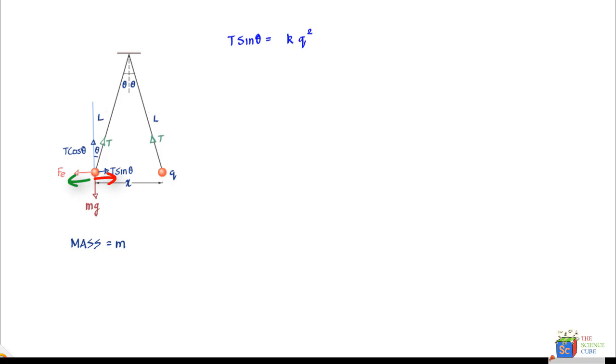We can also say that if the ball is in equilibrium, then the vertical component T cos theta should equal mg. If T cos theta was not equal to mg, the ball would either have gone down or moved up.